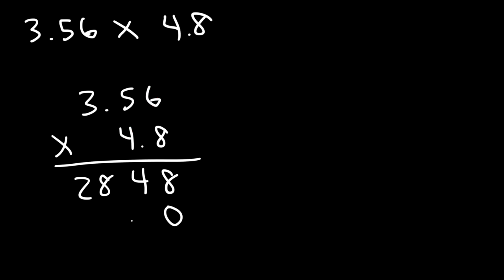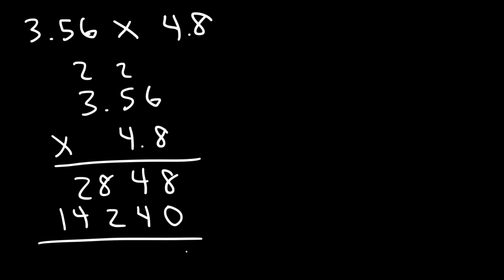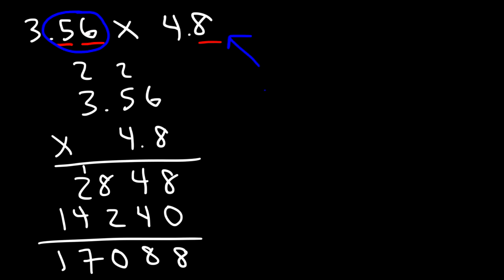So now we have 4 times 6, which is 24. Write the 4, carry over the 2. And then 5 times 4 is 20, plus 2, so that's 22 — carry over the other 2. And 3 times 4 is 12, plus 2, so that's 14. Now let's add: 8 plus 0 is 8. 4 plus 4 is 8. 8 plus 2 is 10 — bring over the 1. Then 4 plus 2 plus 1 is 7. And then we have a 1. We have 3 digits to the right of the decimal point — 2 in this number and 1 in the second. So the decimal point goes here, and our answer is 17.088.